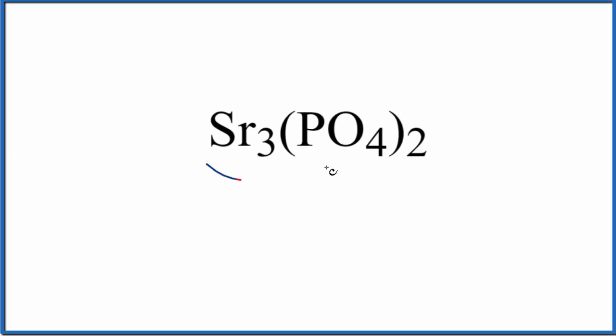Let's write the name for Sr3(PO4)2. So the first thing we note, strontium, that's in group 2, this is a metal. And this PO4, this is a group of nonmetals, it's a polyatomic ion. We have an ionic compound here.